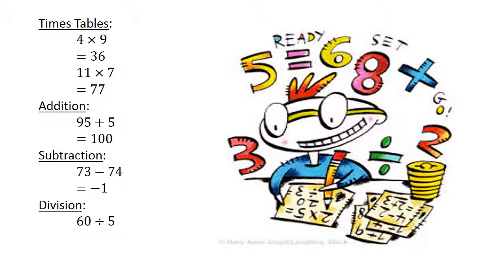Division: 60 divided by 5 equals 12. Square numbers: square of 7 equals 49.